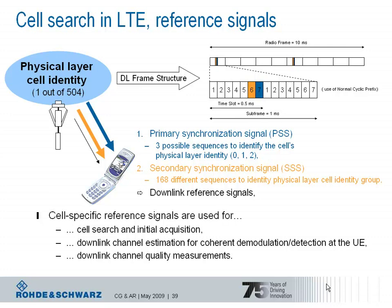CQI values correspond to a specific modulation scheme — QPSK, 16QAM, or 64QAM — and indicate which channel coding should be applied to the data. In this regard, the cell-specific downlink reference signal can be seen as a lighthouse, where the power level refers to the height of that lighthouse. In the matter of cell search, the reference signal also helps the terminal to get fully synchronized in both frequency and time.